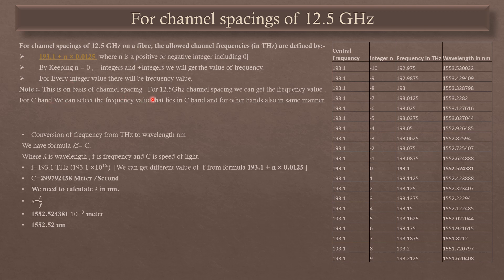One thing to keep in mind: these frequencies are based on the channel spacing. For 12.5 GHz channel spacing, we can get a large number of frequency values. For a particular C-band or L-band, we choose the frequency values that lie within that band.